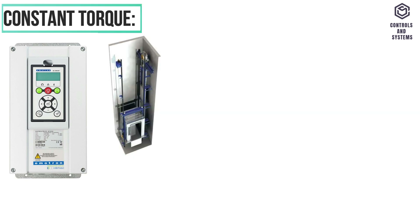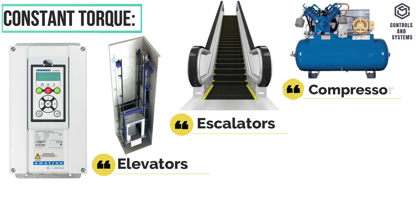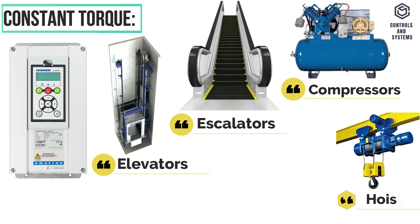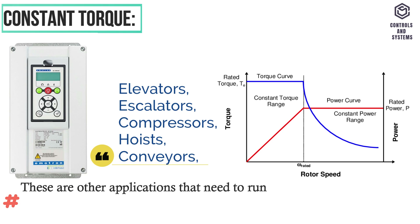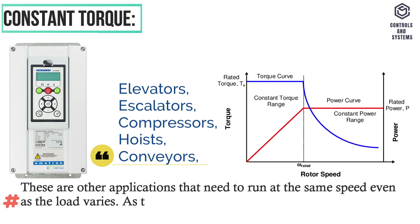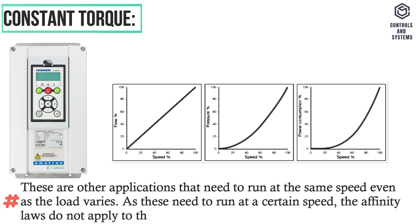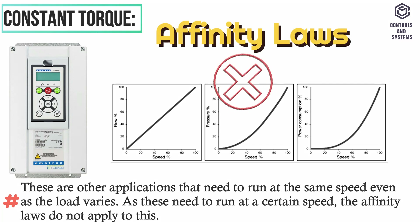Constant torque applications include elevators, escalators, compressors, hoists, conveyors, and more. These are applications that need to run at the same speed even as the load varies. As these need to run at a certain speed, the affinity laws do not apply to them.